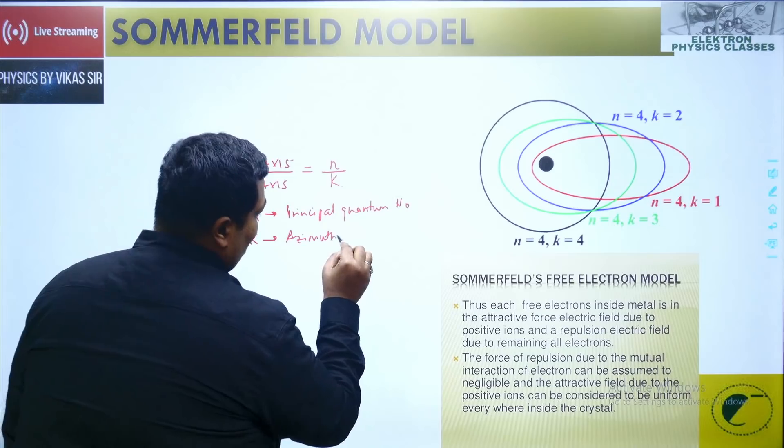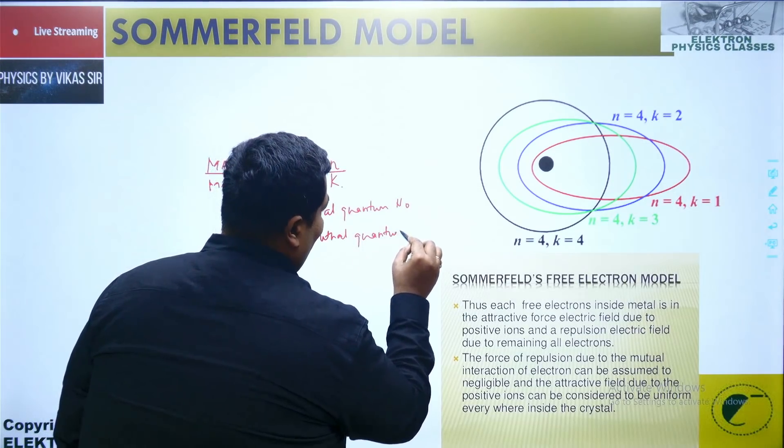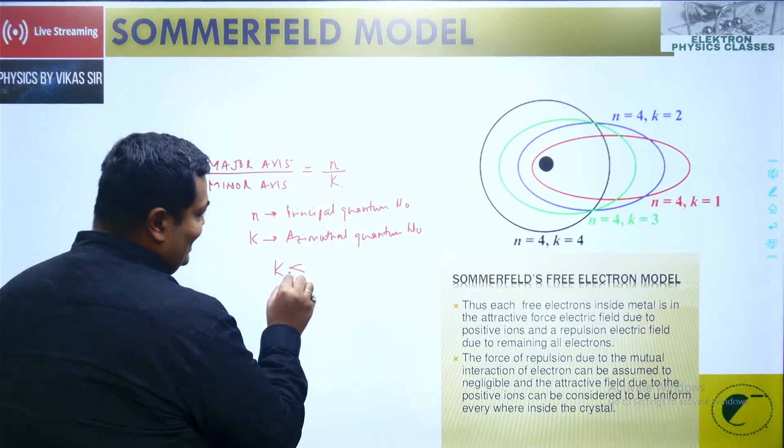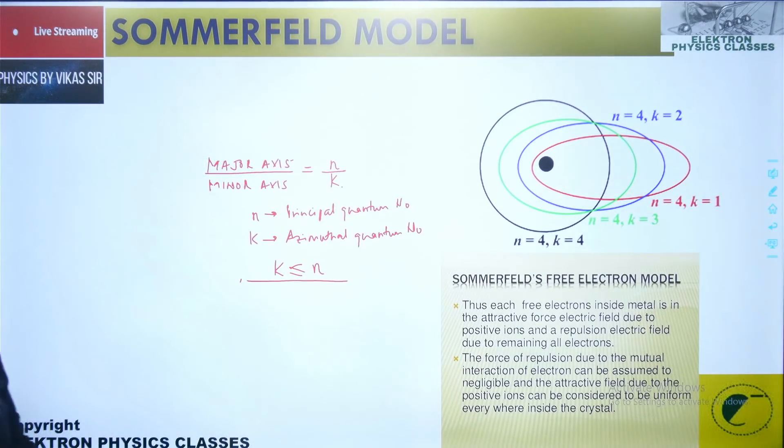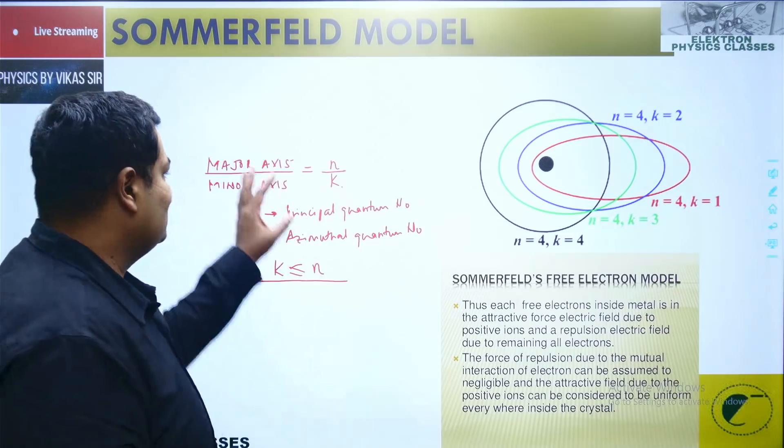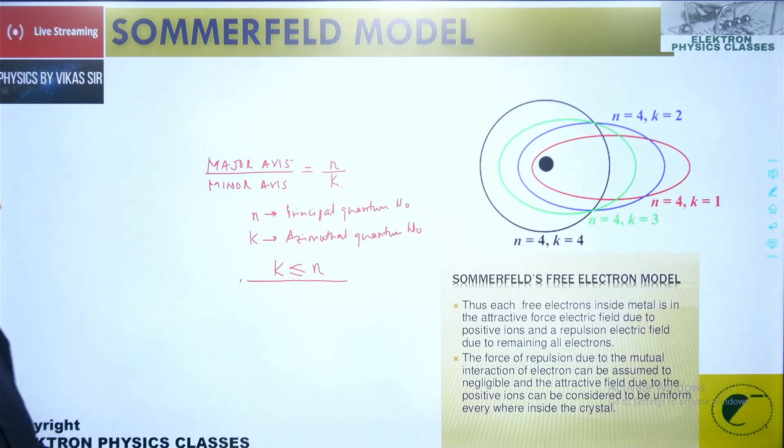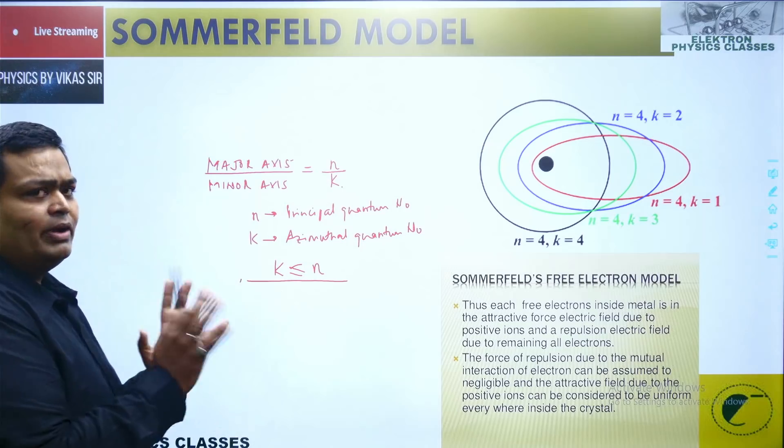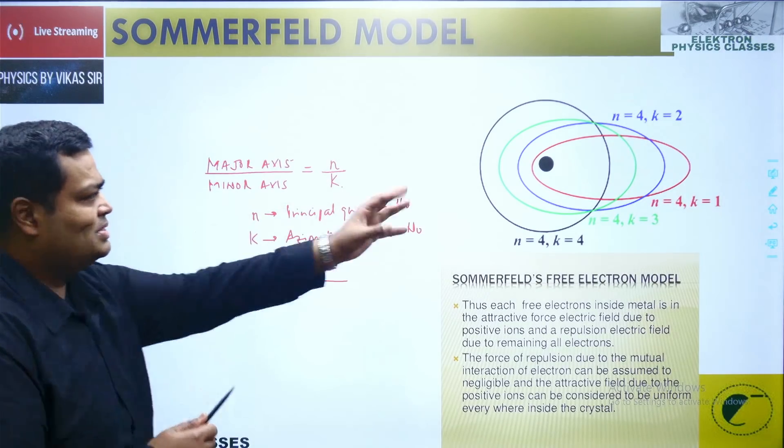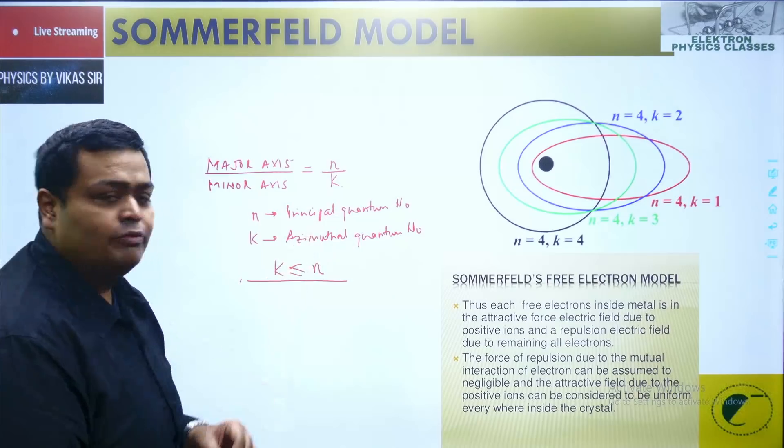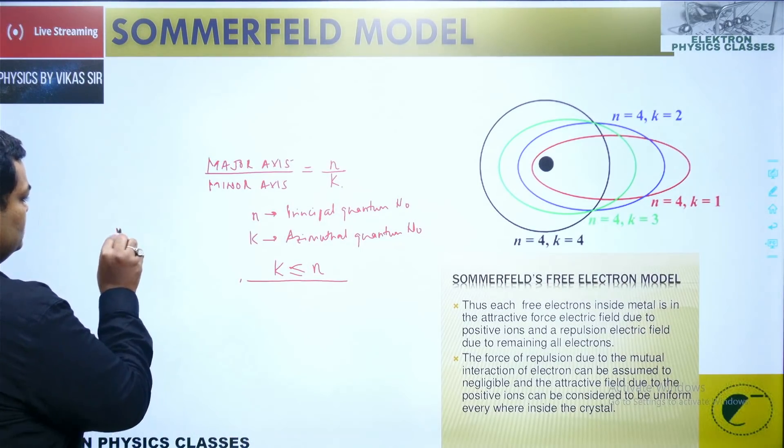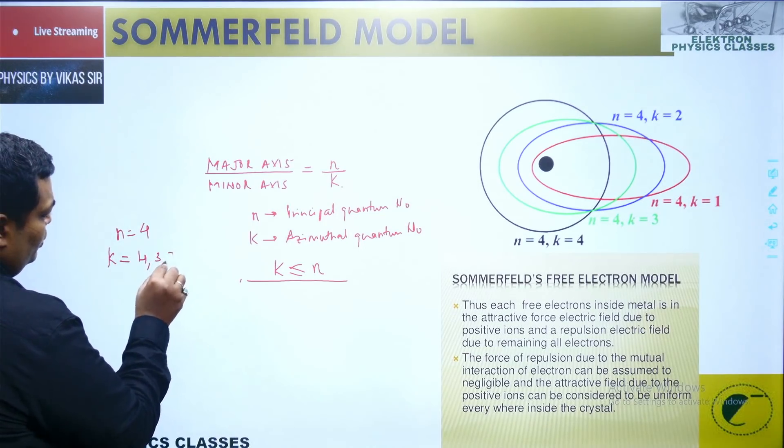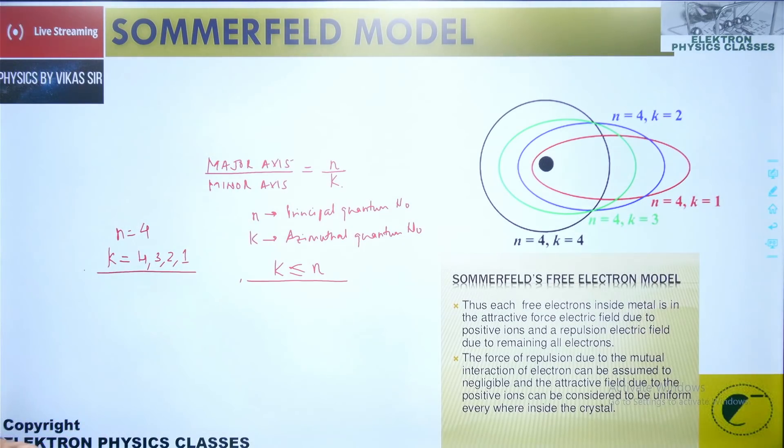The values for this particular k lie between 1 and n, that is k is less than or equal to n, because it cannot cross n since the major axis cannot be more than the minor axis. Correction: the minor axis cannot be more than the major axis. Now let's take a value for n. Let's decide the n value as 4 as in this particular illustrated figure. So if n is equal to 4, then the possible values for k will be 4, 3, 2, and 1.